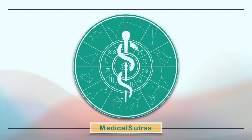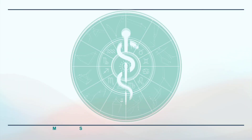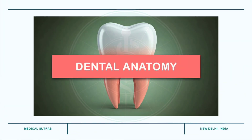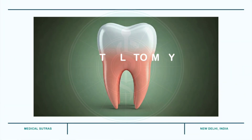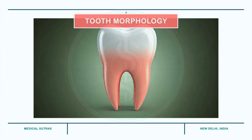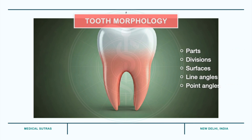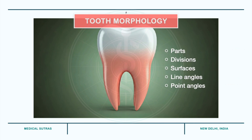Hello everyone, welcome to the series on dental anatomy. In today's video we will discuss tooth morphology — that is the structure and form of teeth. The topics we will cover include parts and divisions of teeth, surfaces, line angles, and point angles.